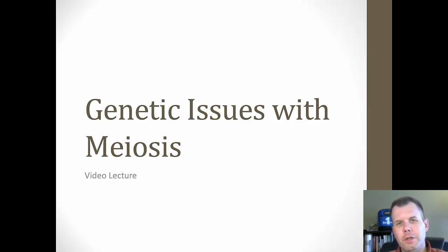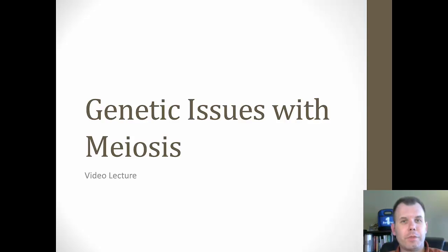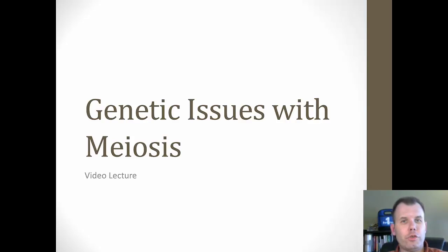Hi class, Dr. Jim here. In this lecture we're going to look at what happens when meiosis goes wrong. In the last lecture I showed you that during meiosis we get that equal division of cells and the number of chromosomes gets reduced in half. But what happens when it doesn't go right? You end up with a cell with too many or too few chromosomes, and we have genetic disorders that can occur. So in this lecture we're going to look at some of the genetic disorders that can occur when the meiosis process doesn't go correctly.